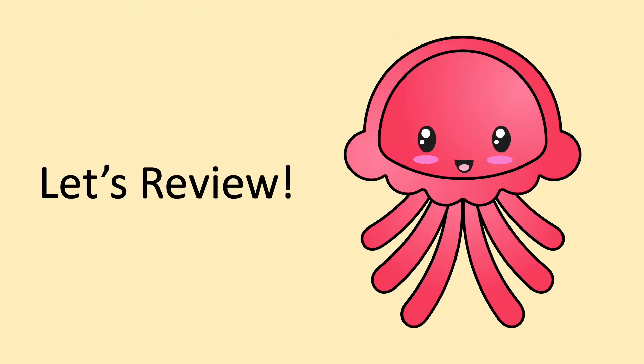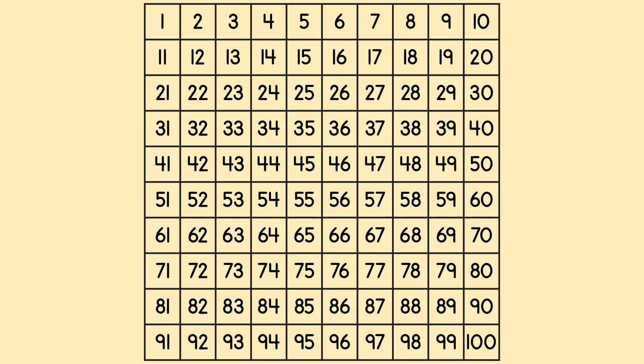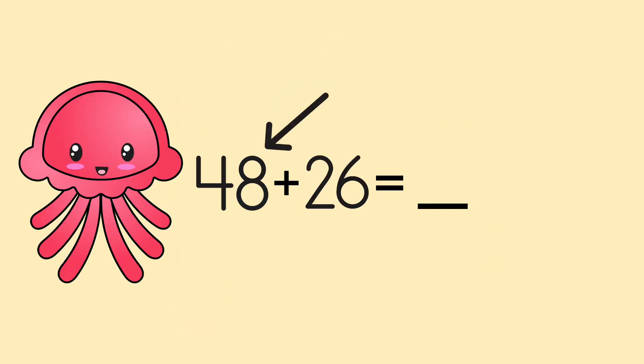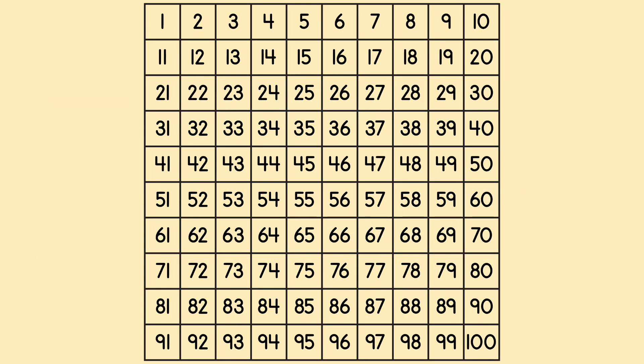So let's review. Remember, whenever we add on a hundreds chart, we always move to the right or down. So our number sentence was 48 plus 26 equals blank. We found 48 on our hundreds chart. Then we took a look at 26. 26 is 20 plus 6.